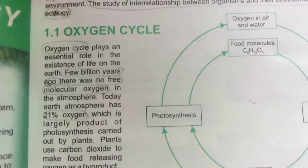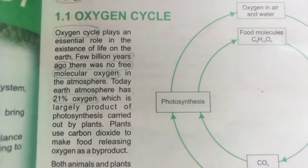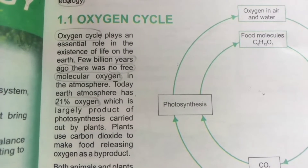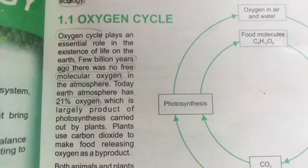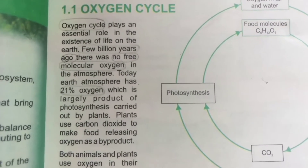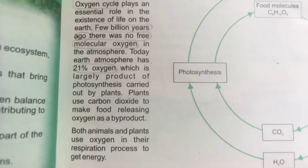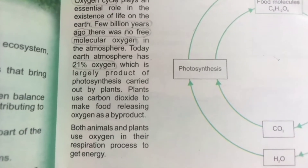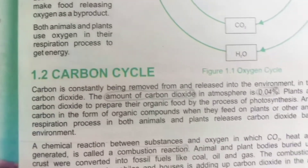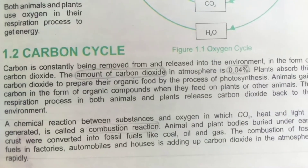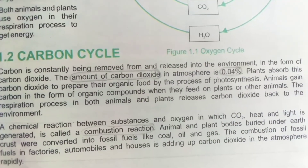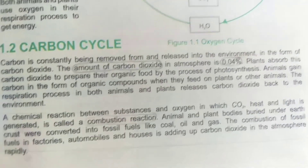The oxygen cycle plays an essential role in the existence of life on Earth. A few billion years ago, there was no free molecular oxygen in the atmosphere. Today, Earth's atmosphere has 21% oxygen. The amount of carbon dioxide in the atmosphere is 0.04%.